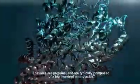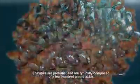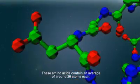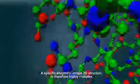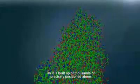Enzymes are proteins and are typically composed of a few hundred amino acids. These amino acids contain an average of around 20 atoms each. A specific enzyme's unique 3D structure is therefore highly complex as it is built up of thousands of precisely positioned atoms.